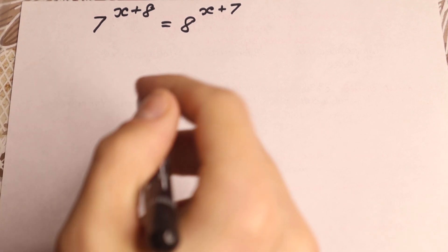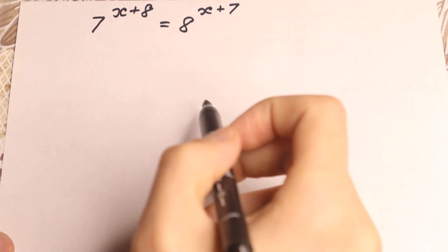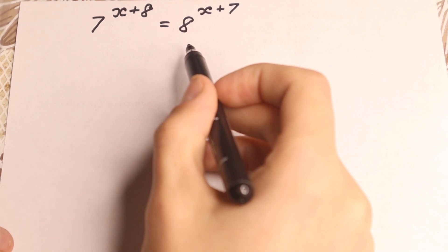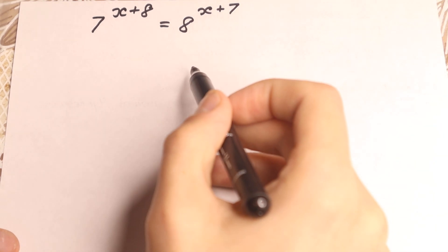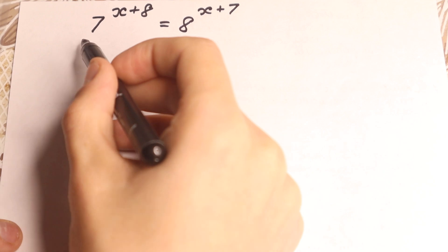In this video we are going to solve a really interesting Olympiad problem: 7 to the power x plus 8 equal to 8 to the power x plus 7. Really interesting question and let's try to solve it step by step.